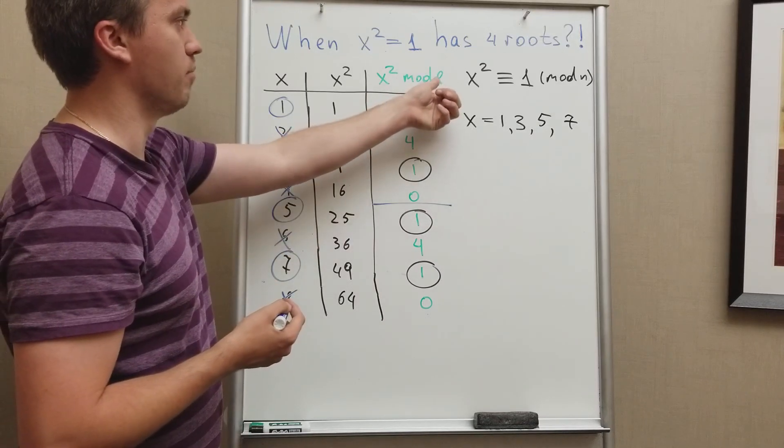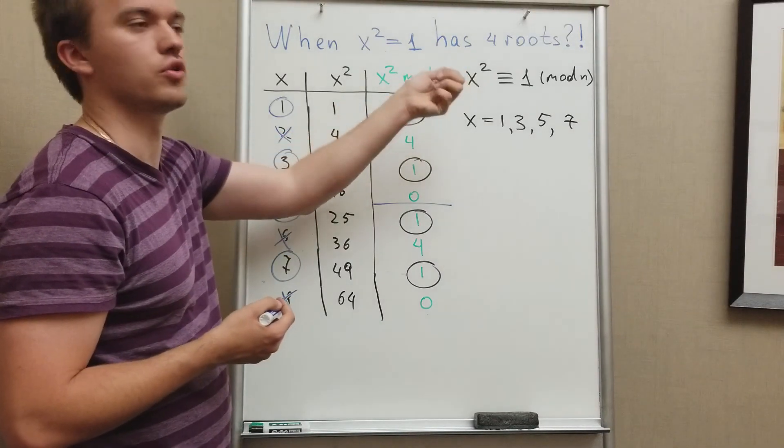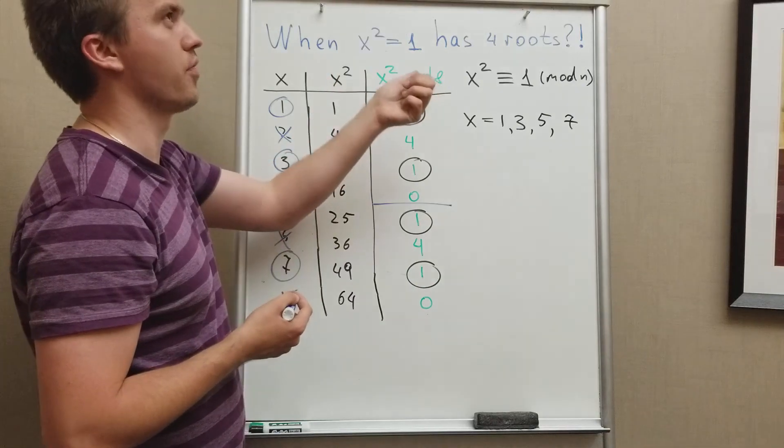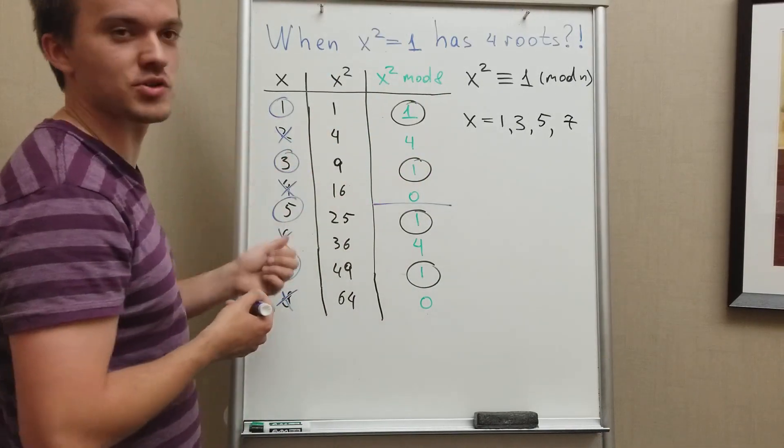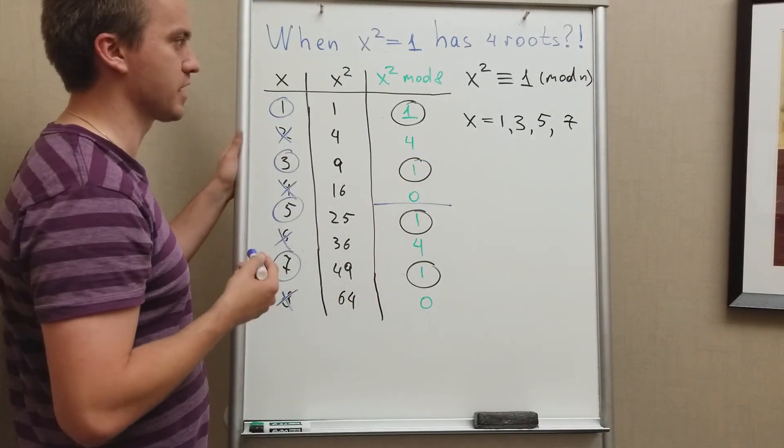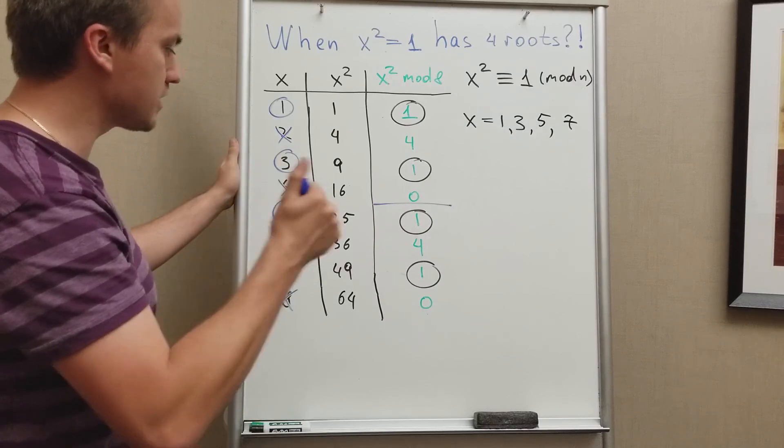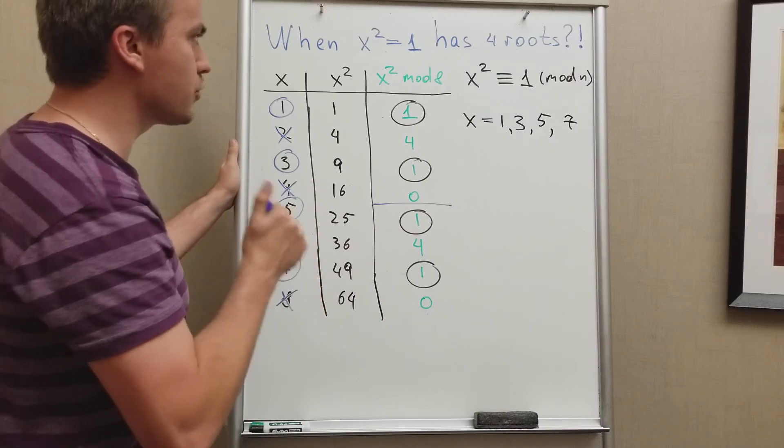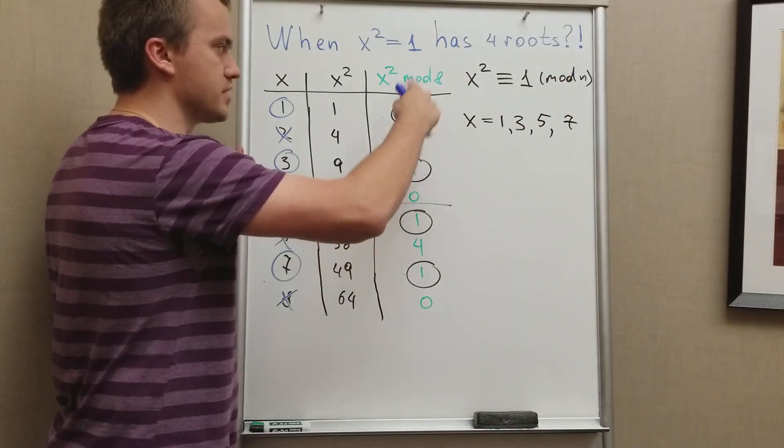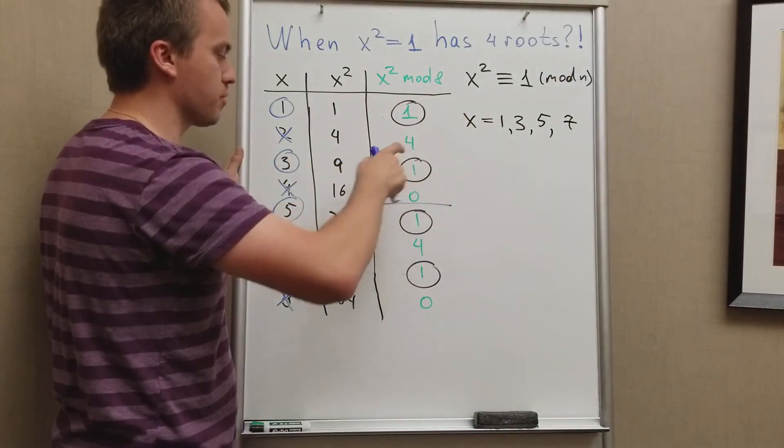So if for example we're going to take mod 16, or like what's the next one, 32 or 64, how many roots, what kind of pattern are we going to have in this case? And the last thing, it's going to tell the reason why we have four roots over this algebraic structure, because...